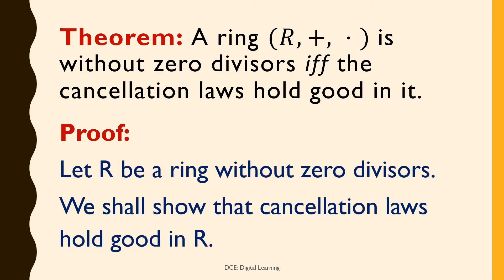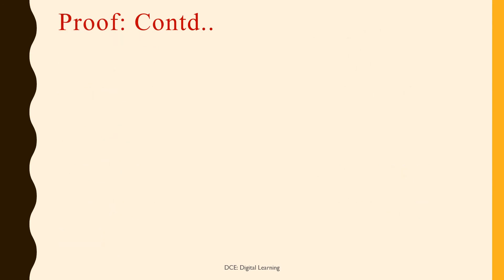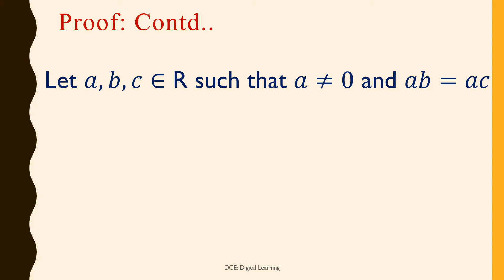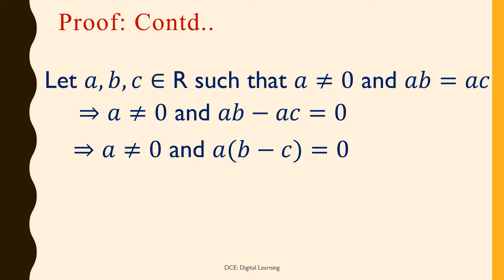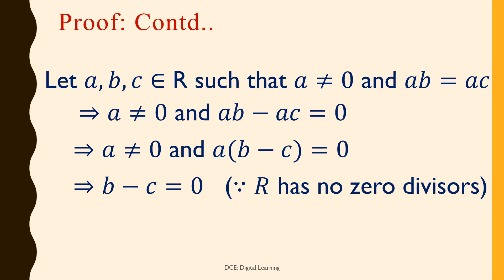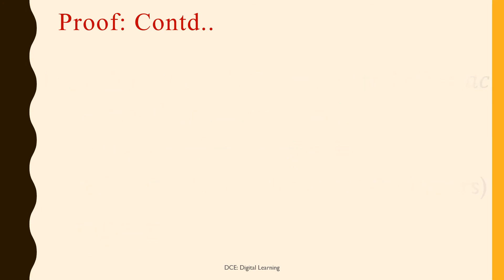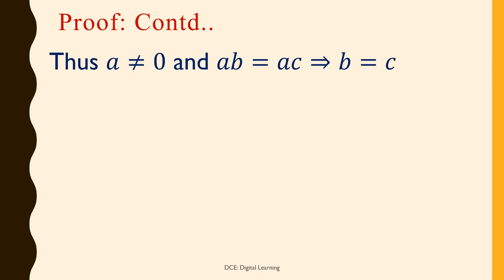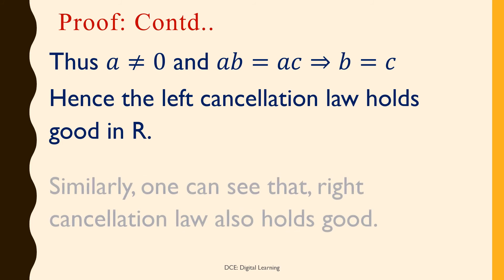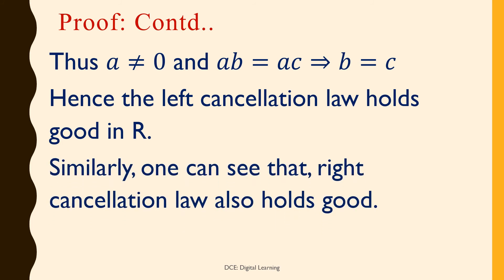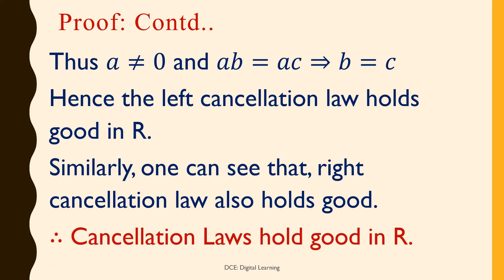Proof: Let R be a ring without zero divisors. We shall show that cancellation laws hold good in R. Let a, b, c belong to R such that a ≠ 0 and ab = ac, which implies a ≠ 0 and ab − ac = 0, which implies a ≠ 0 and a(b − c) = 0, which implies b − c = 0 since R has no zero divisors, which implies b = c. Thus a ≠ 0 and ab = ac implies b = c, so the left cancellation law holds good in R. Similarly, the right cancellation law also holds good. Therefore, cancellation laws hold good in R.